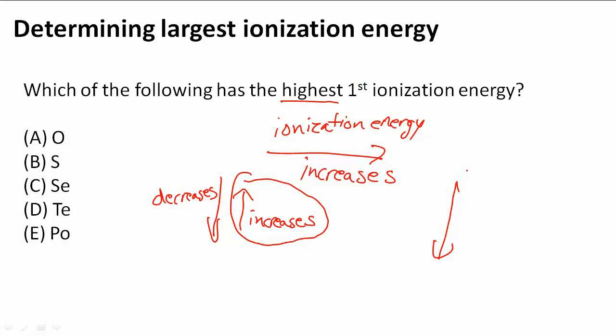So the highest one, the one that's at the top of that group, is actually O. So O has the highest energy, highest first ionization energy, and that is going to be the answer to our question.